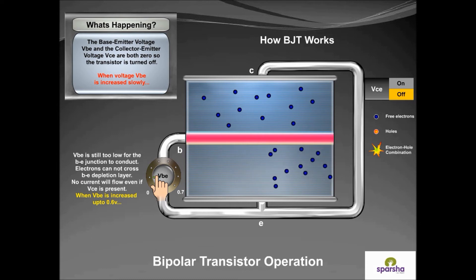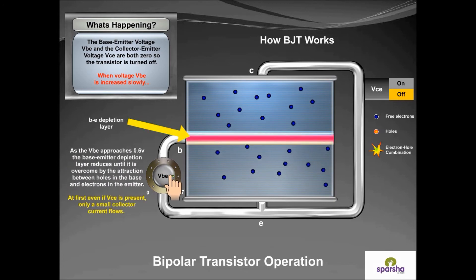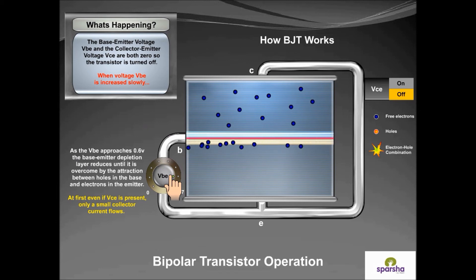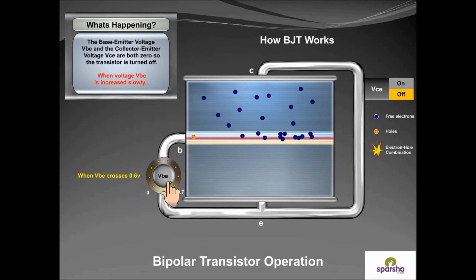See what happens when VBE is increased up to 0.6 volts. As VBE approaches 0.6 volts, the base-emitter depletion layer reduces until it is overcome by the attraction between holes in the base and electrons in the emitter. At first, even if VCE is present, only a small collector current flows.